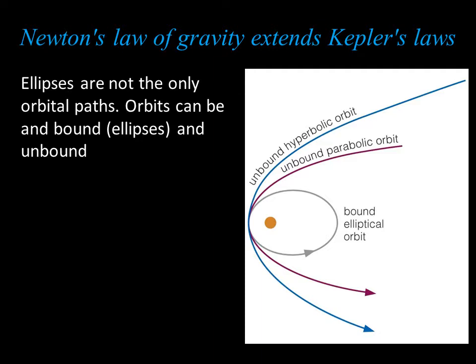With the aid of mathematics and calculus, Newton showed that Kepler's laws applied to all orbiting objects, not just planets. Also, he found ellipses are not the only possible orbital paths. Ellipses, which include circles, are the only possible shapes for bound orbits. But objects can also follow unbound orbits — paths that bring an object close to another object just once. Some comets, for example, follow unbound orbits. They come in from afar just once, loop around the Sun, and then never return.